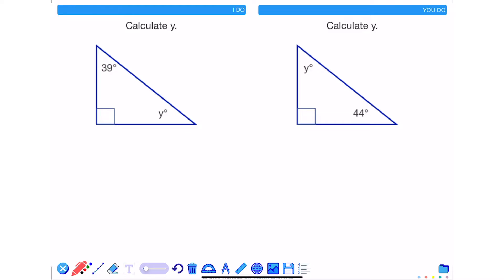With the example on the left hand side I need to be able to calculate the angle y. I can see that it has a little square in the corner which indicates that this is a 90 degree angle.